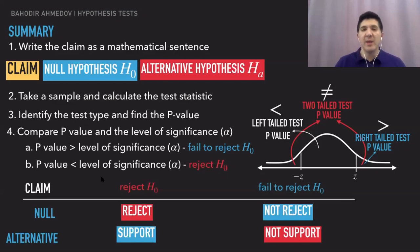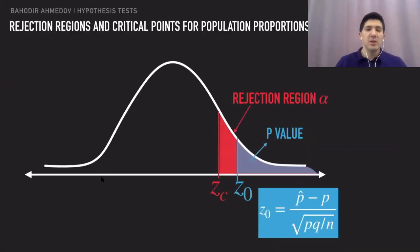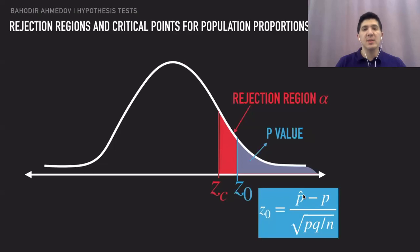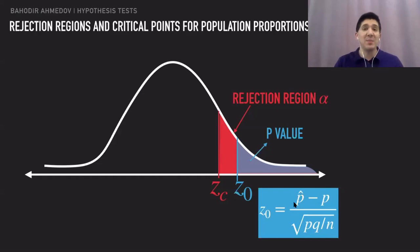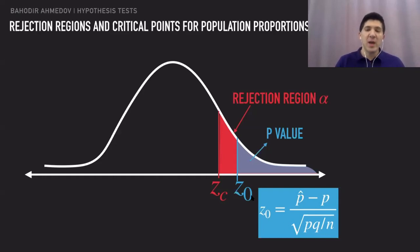The main question is how to define the test statistic. For proportions we use a specific formula: the test statistic Z equals p-hat minus p, divided by the square root of p times q over n. Here, p is the population proportion used in the claim, p-hat is the sample proportion, q equals 1 minus p, and n is the sample size. We check whether this test statistic falls in the rejection region. Before solving a problem, we verify two conditions to use the standard normal distribution: n times p must be greater than 5, and n times q must also be greater than 5.